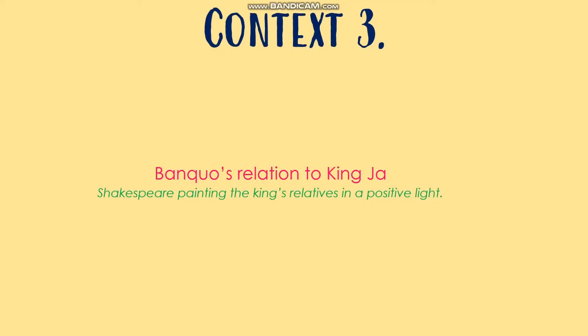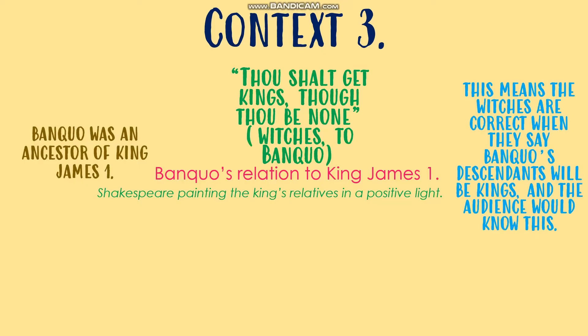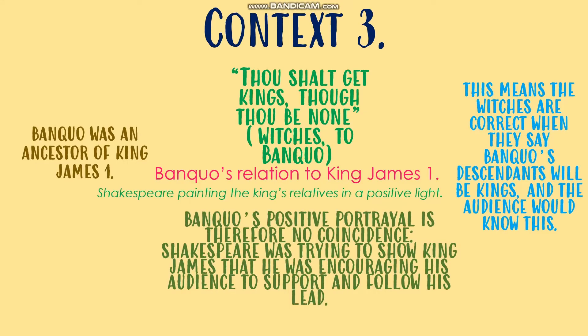Context piece number three is the fact that Shakespeare, once again trying to make himself popular with King James I, made one of King James I's relatives — Banquo — very positive in the play. When the witches say to Banquo 'your sons will be kings,' they're actually referring to the fact that King James I will be in power. Because the real-life Banquo is actually an ancestor of King James I, so they are making a correct prediction that the audience would be well aware of. The fact that Banquo comes across as one of the most positive characters in the play shows Shakespeare wanting to portray the king's family in a positive light.